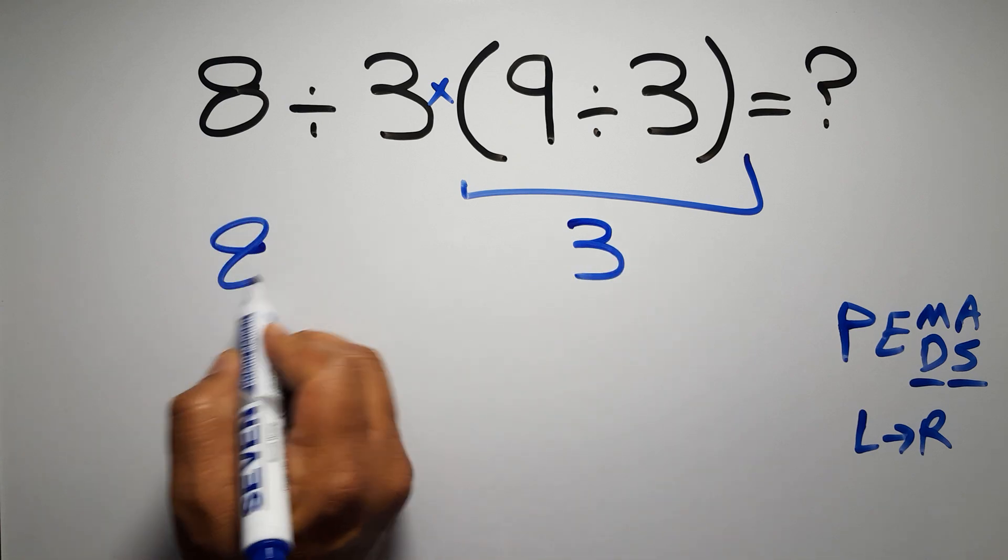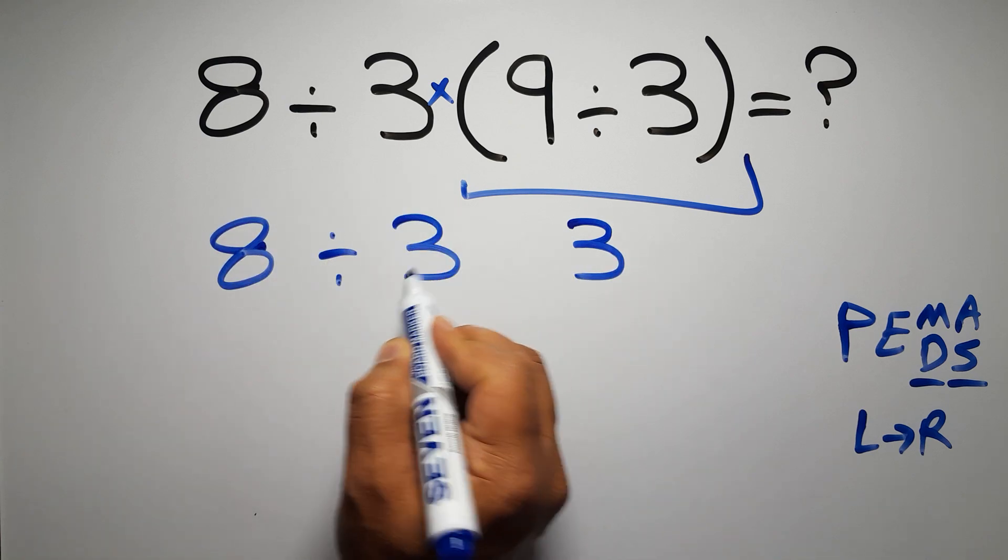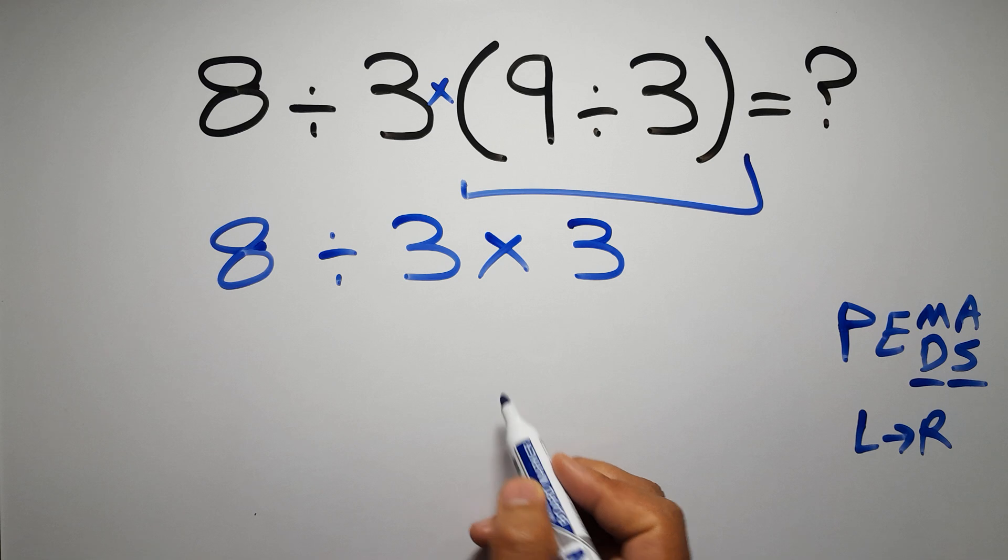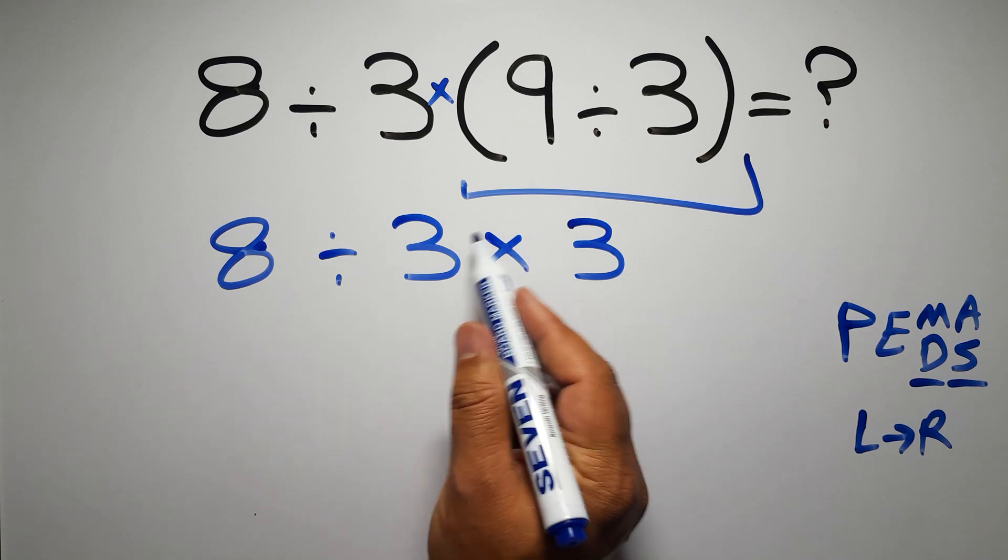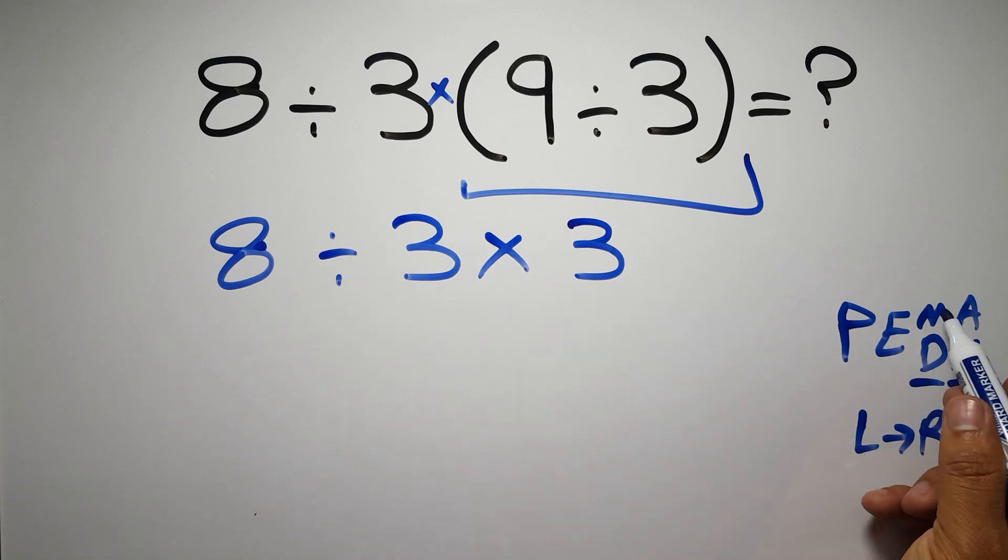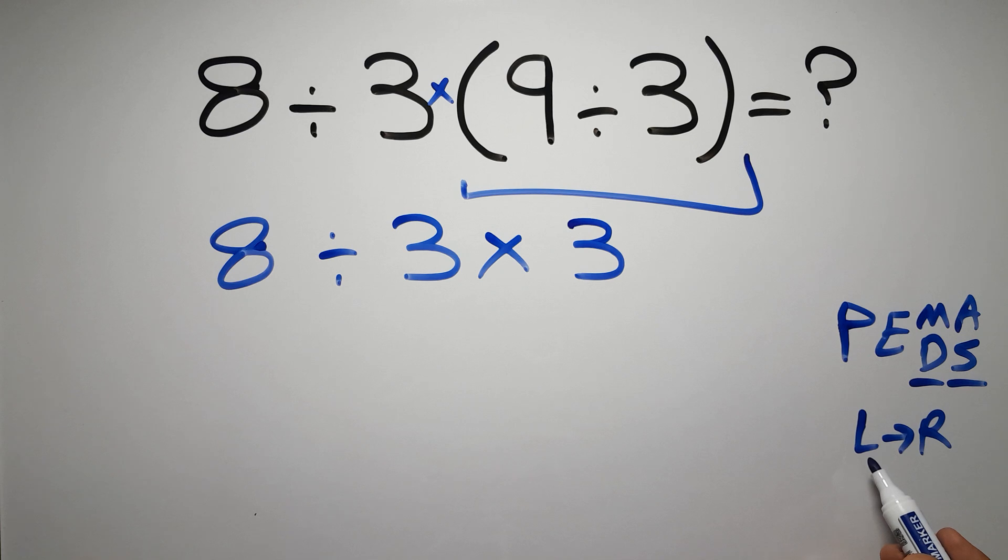So 8 divided by 3 times 3. Now we have one division and one multiplication. As I said, multiplication and division have equal priority, and we have to work from left to right. So here, first we have to do this division.